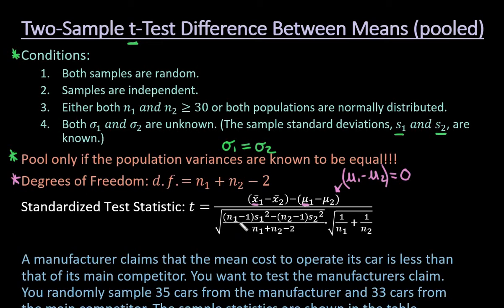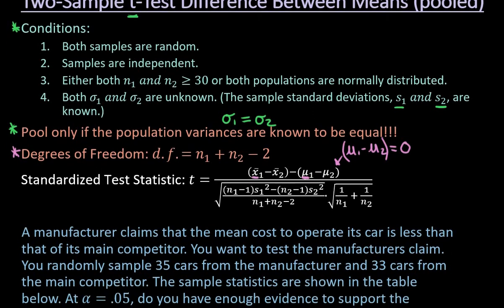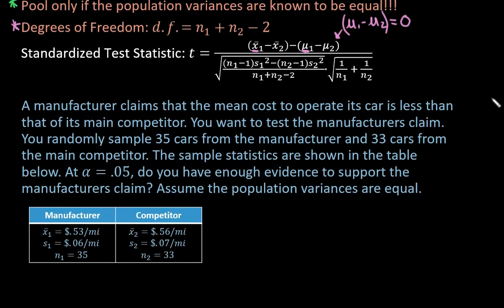N1 represents the sample size of your first group, and N2 represents the sample size of group 2. S1 is the sample standard deviation of your first group, and S2 is the sample standard deviation of your second group. For this video, I'm going to show you how to get T in the calculator rather than showing all the work — I'll do another video using the rejection region decision rule showing how to plug all values into the formula.